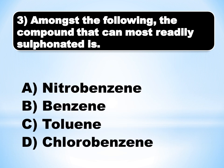The methyl group is electron-donating, which increases the electron density in the ortho and para positions, and the sulfonation is easy.